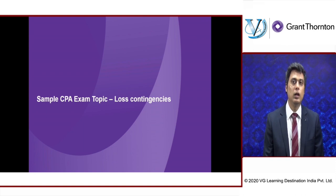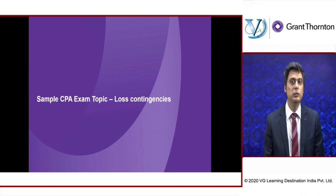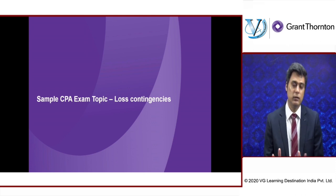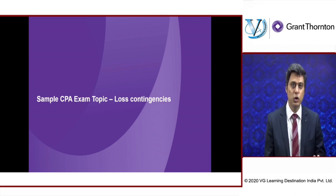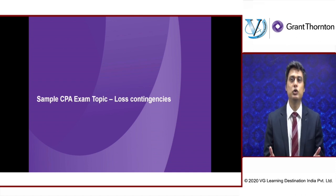Category 2: you think it is reasonably possible that they are chasing you, because whether it is 65, 70, or 75, you have crossed the limit — over-speeding is over-speeding. Therefore, there is a reasonable possibility that this police car is chasing you. If that is your assessment, then you will make a disclosure in the notes to financial statements. Try to register those terms in your mind: remote means ignore; reasonable possibility means make a disclosure in the financial statements.